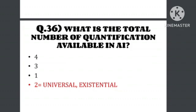Question number 36: What is the total number of quantifications available in artificial intelligence? The total number of quantifications are two — universal and existential.